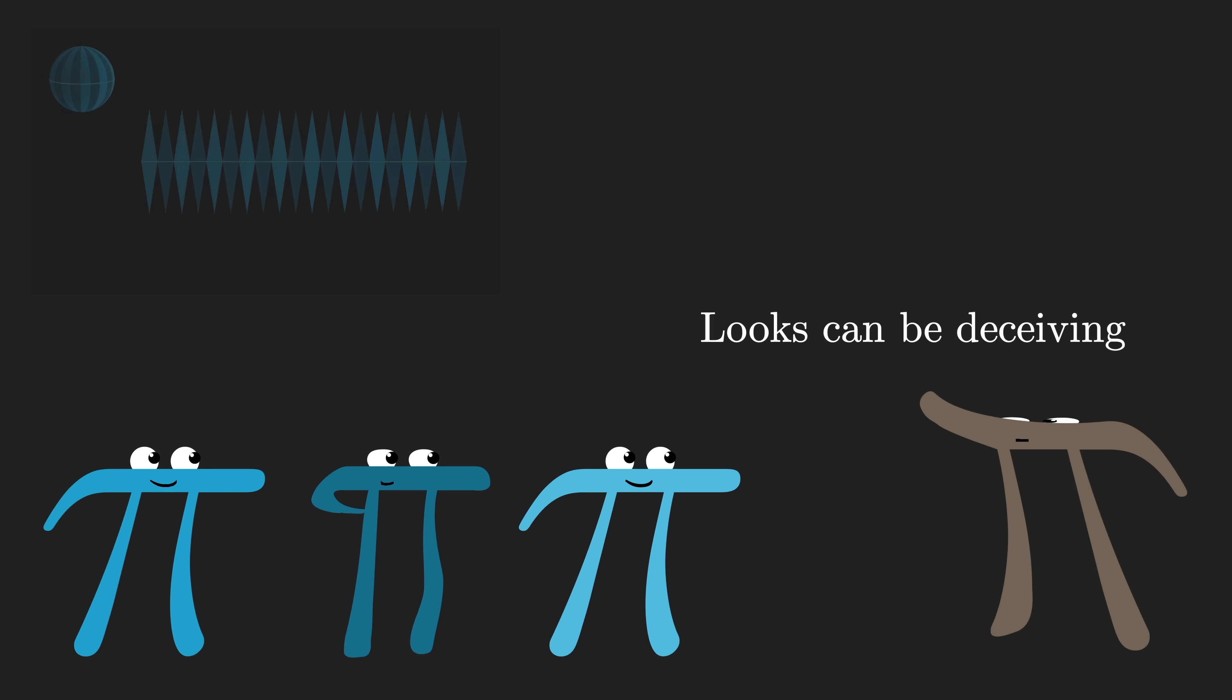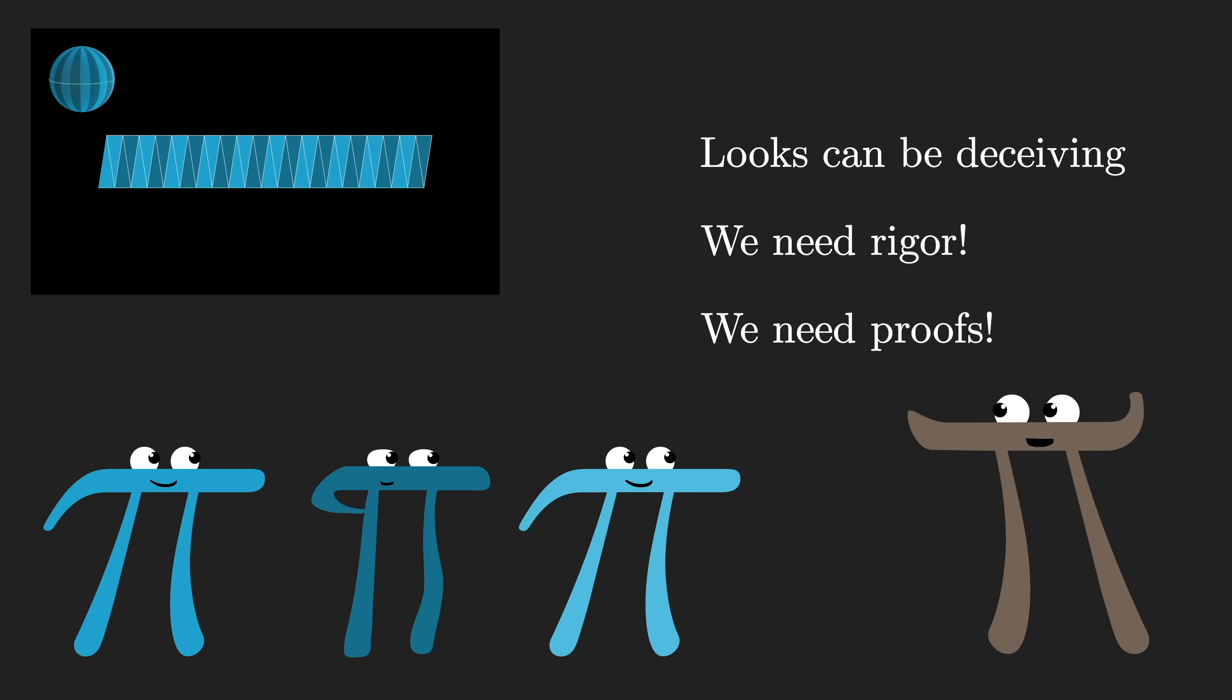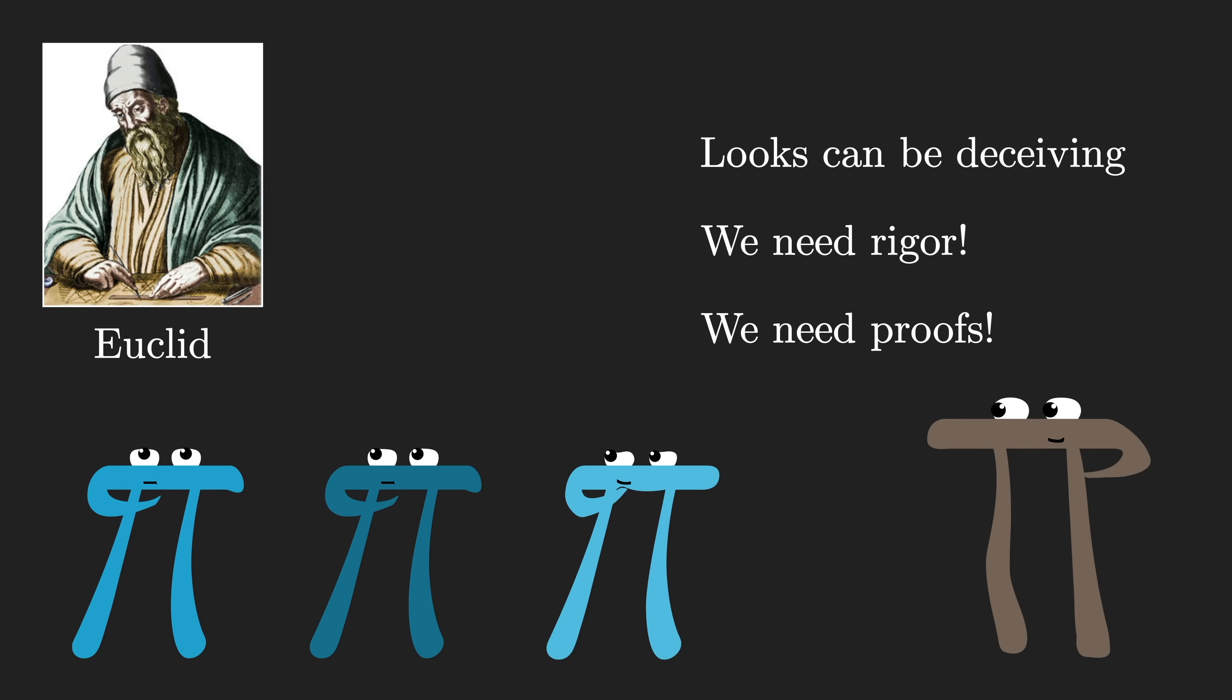And maybe at this point you step back and say, you know, it's just not enough for things to look the same. This is why we need rigor. It's why we need proofs. It's why since the days of Euclid, mathematicians have followed in his footsteps and deduced truths step by step from axioms forward.